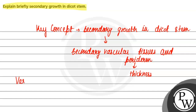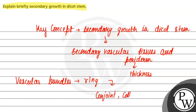Vascular bundles in the dicot stem are organized in a ring. The vascular bundles are collateral and open type.